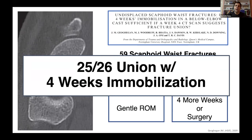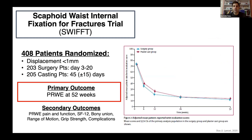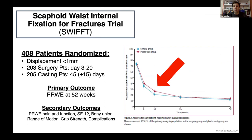That leads us to the SWIFT trial. A large study — 400 patients randomized and assessed. 203 had surgery in the first one to three weeks; the other half had cast immobilization for an average of 45 days. The primary outcome was PRWE at 52 weeks. There was no difference at 52 weeks between surgery and cast immobilization. The surgery group did have higher functional scores at 12 weeks, but at 52 weeks there was no difference. Not surprisingly, there were higher rates of surgical complications in the surgical group.